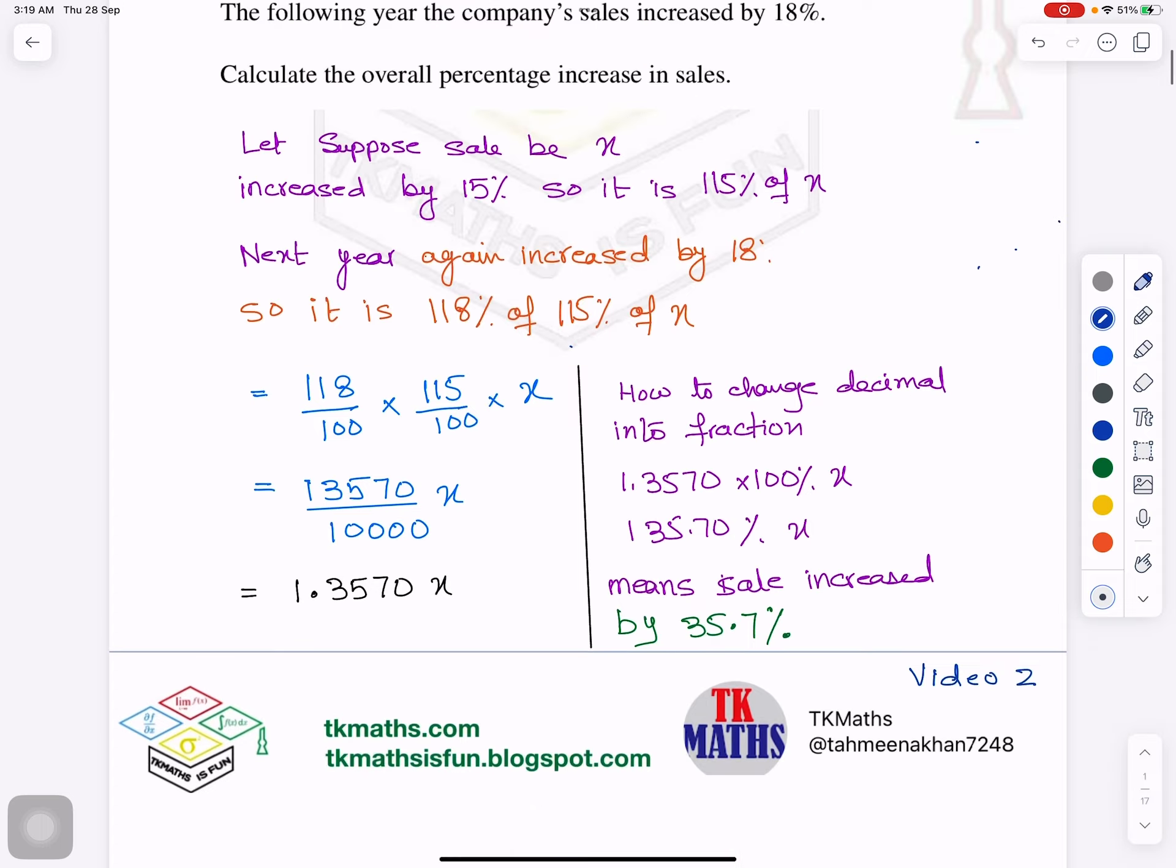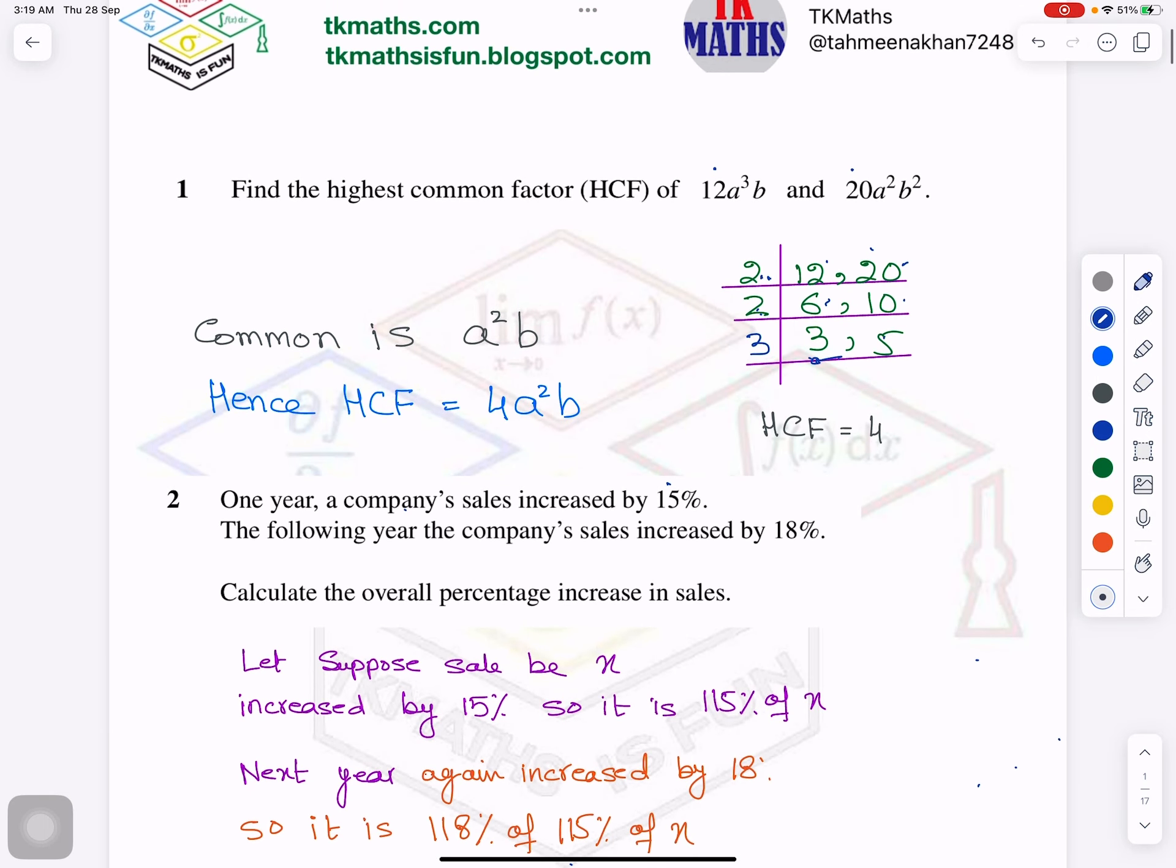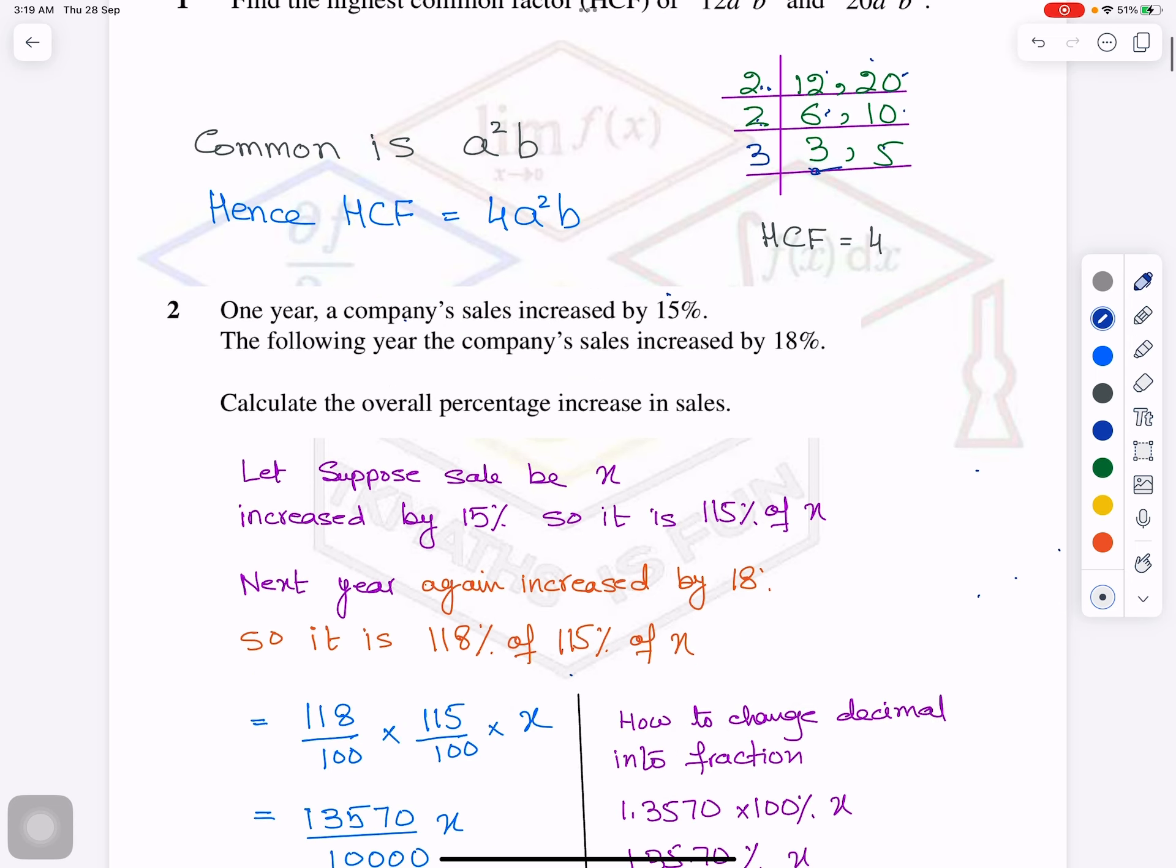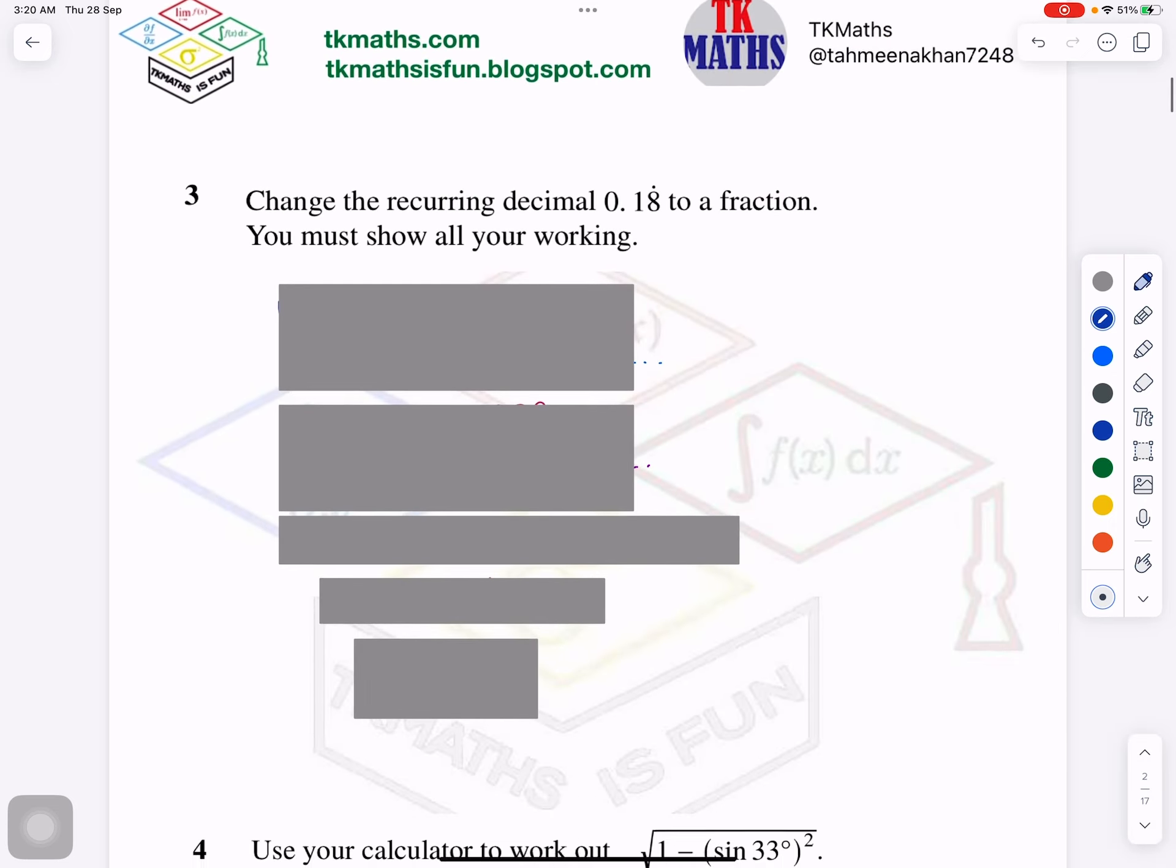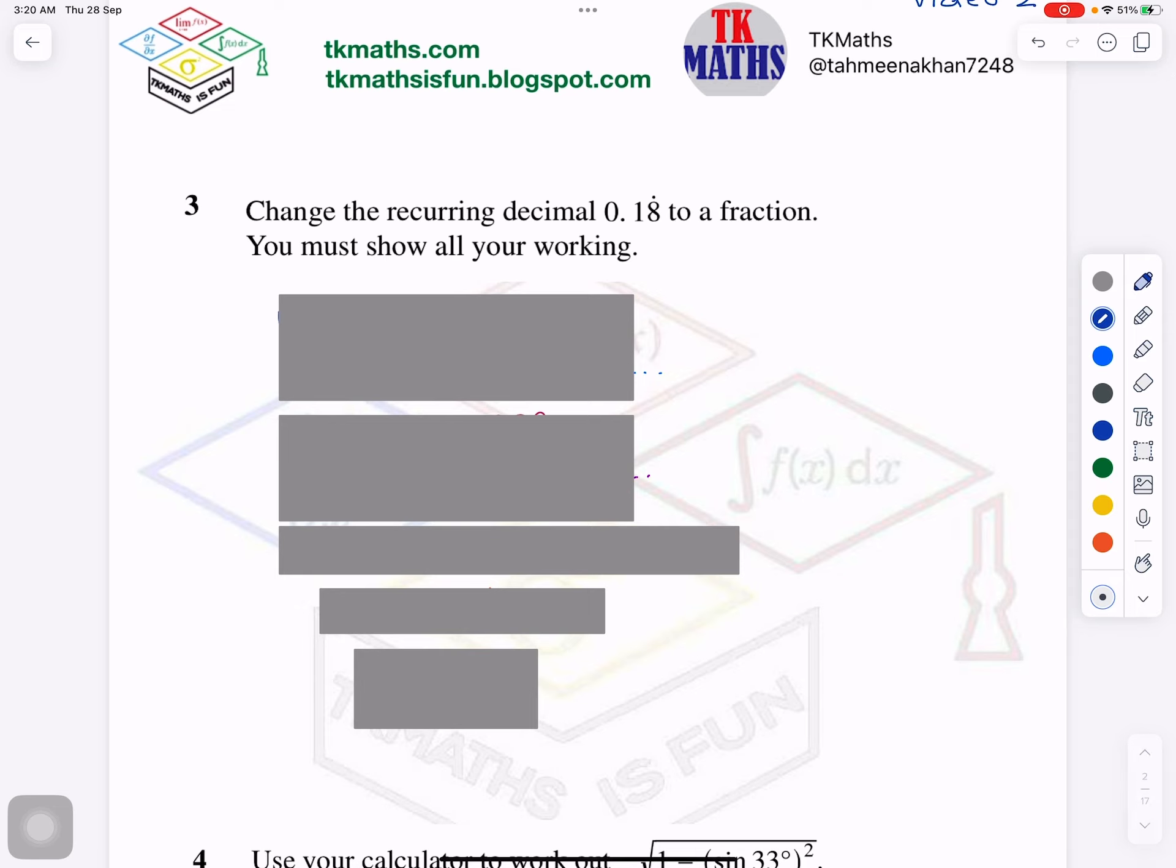So in the earlier video I have explained two questions which were about the highest common factor of the terms which have letters in it. And I explained the type of percentage question in which percentage is increasing twice and the original value is not given. And the link of that video is given in the description.